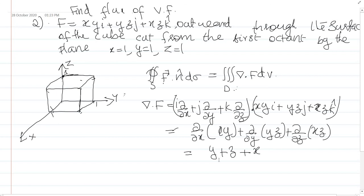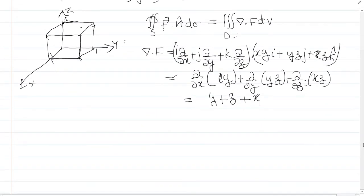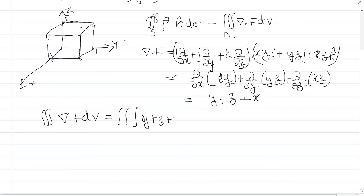Next we evaluate the triple integral of ∇·F dV = ∭(y + z + x) dx dy dz. Since it is a unit cube, all variables range from 0 to 1.